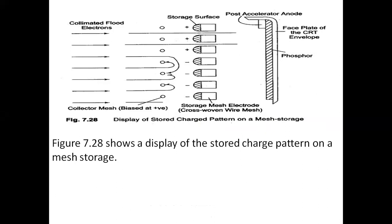In normal CRTs, the applied signal will disappear within one second. Whereas in the storage oscilloscope, we can hold the waveform for a few hours. This is because the electron guns produce low velocity electrons, and those electrons pass through the positive charged particles of the storage mesh and hit the storage surface of the CRT.